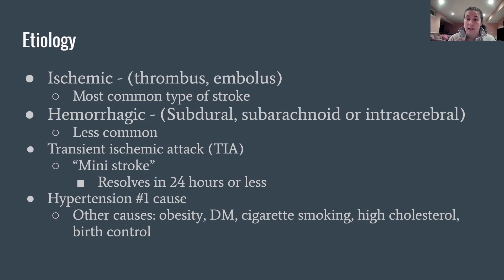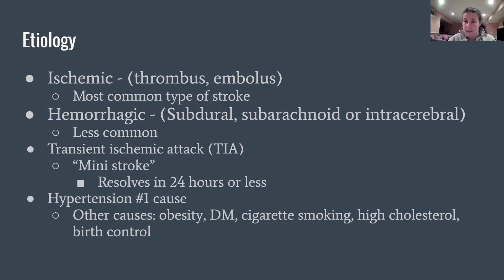The next common type is a hemorrhagic stroke, where blood is actually hemorrhaging out into a certain part of the brain. The most common ones are either subdural — so under the dura mater — subarachnoid, in the subarachnoid space under the arachnoid mater, or intracerebral, which is inside the brain itself. This is less common than ischemic, but most sources say at least 15% of strokes, maybe even more.